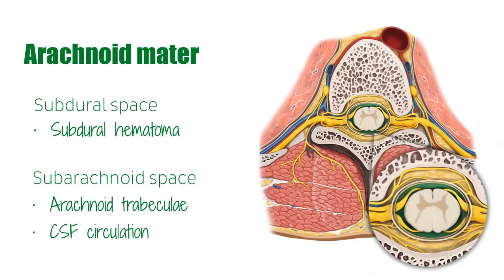This space extends down to the termination of the spinal arachnoid mater at the level of the S2 vertebra. It is also important to note that cranial nerves, roots of spinal nerves, arteries, and veins from both the brain and spinal cord pass through the subarachnoid space.